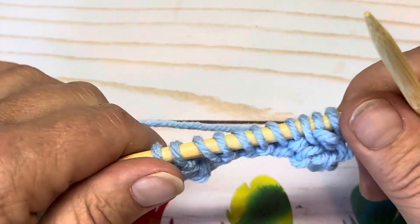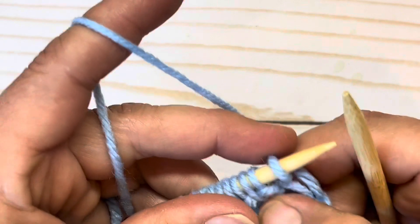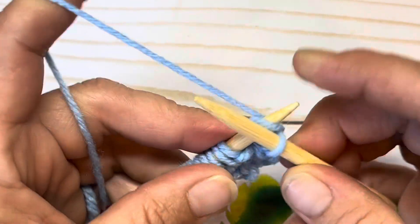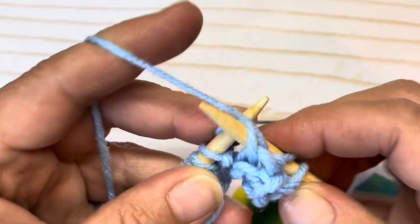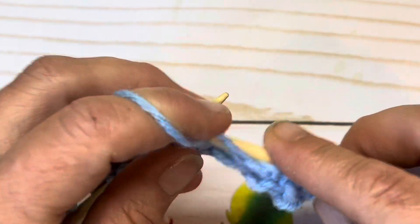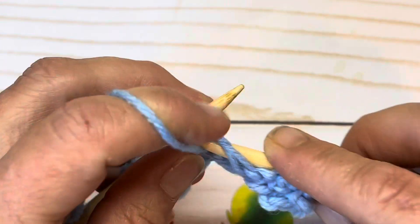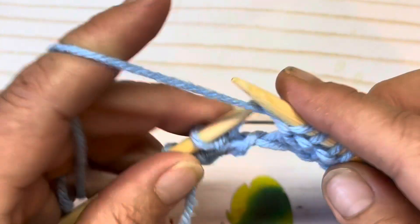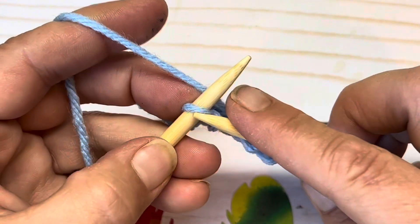Turn your work over and let's begin row two. Row two, you're going to knit the first stitch, purl the next nine - one, two, three, four, five, six, seven, eight, and nine - and knit the last stitch.